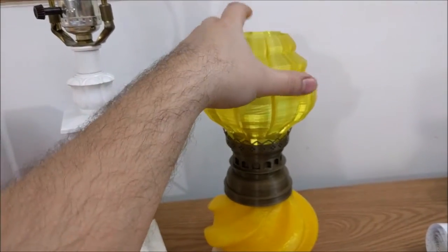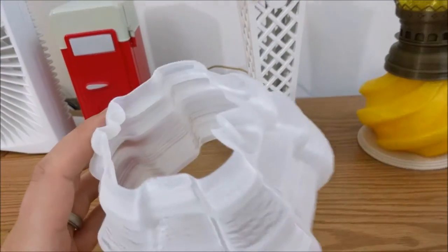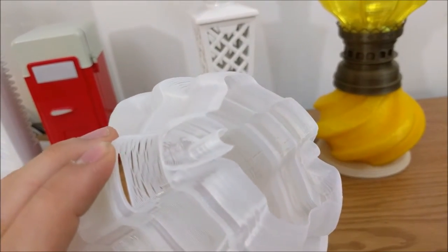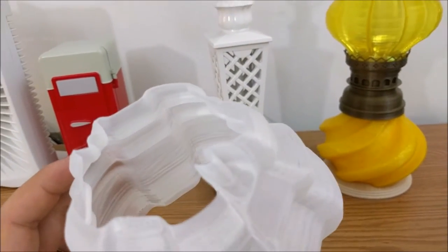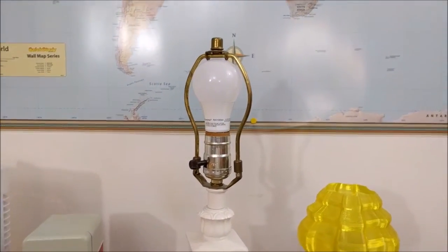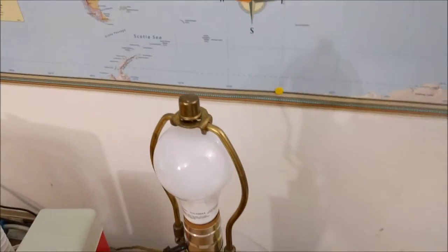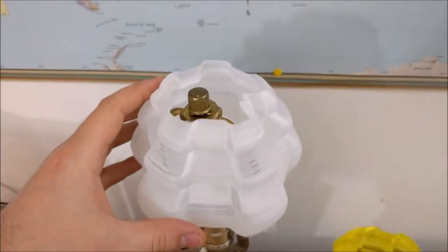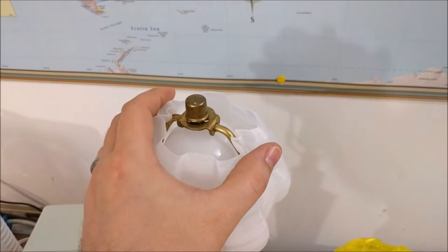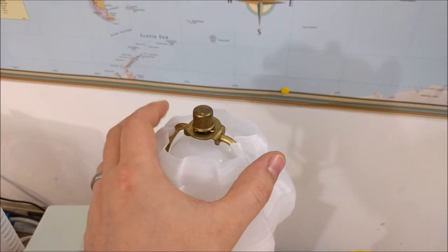So I took that idea and I chopped it up in Tinkercad and I added some little nubs here so that it'll snap on top of the metal part of a regular lamp. So this is going to go right there and just snap into place so it holds it in place.